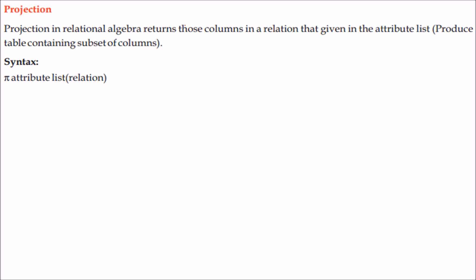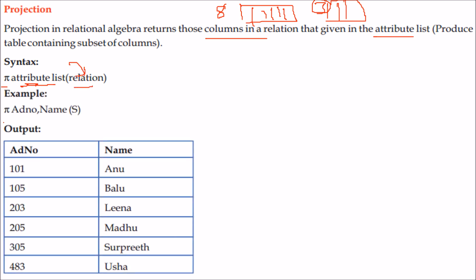Projection in relational algebra returns specified columns from a relation. It produces a table containing a subset of columns. The syntax is π(attribute list)(relation). For example, π(ad_number, name)(S) — if the student table S has columns admission number, name, class, section, etc., and you want only admission number and name, you will get those two columns for all rows.